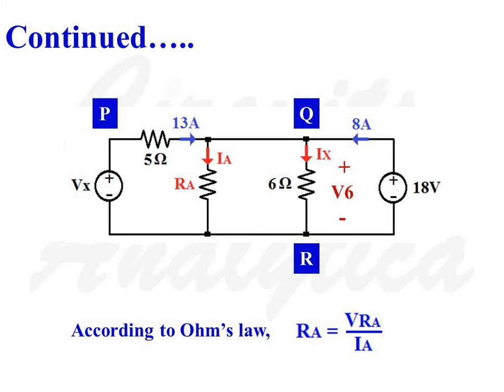VRA is the voltage drop across the unknown resistor RA, and IA is the current flow through unknown resistor RA.